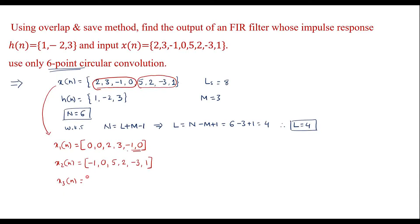The third sub-block x3 of n consists of the last M minus 1 samples of x2 of n, which are minus 3 and 1, followed by L new samples of x of n. However, all x of n samples have already been used in x1 and x2, so no new samples are available and we assume them as zeros. So x3 of n is: minus 3, 1, 0, 0, 0, 0.